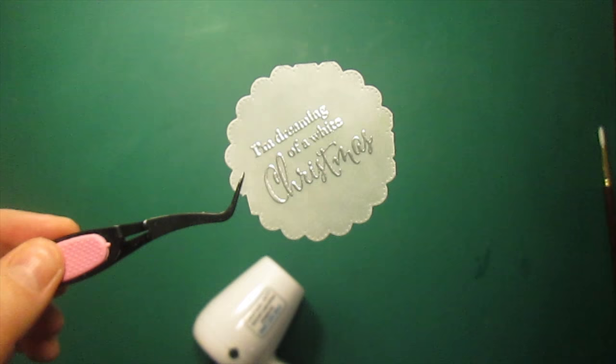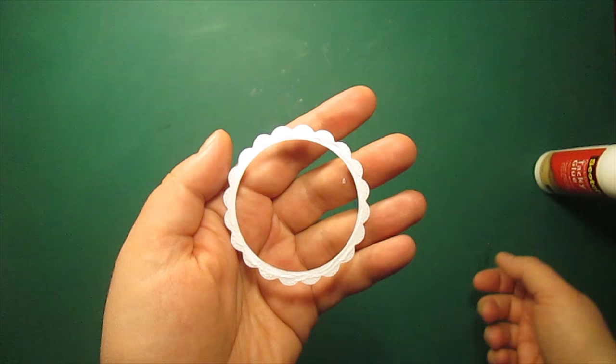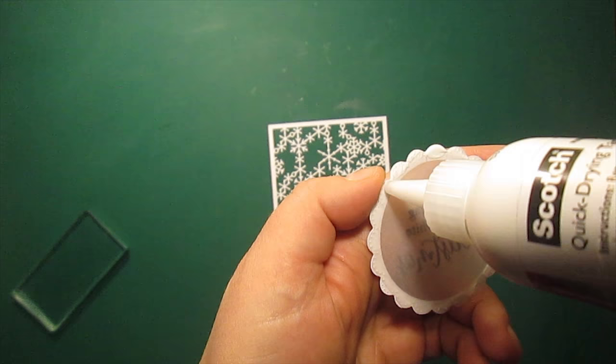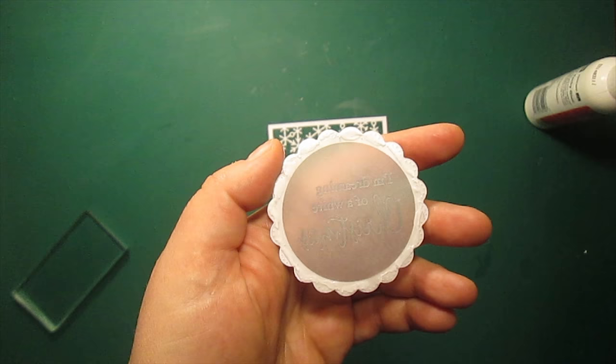I'm using Tacky Glue by Scotch to attach the white frame to the vellum circle. Then I'm applying the glue again only behind the white border and attaching the circle onto the snowflake background.